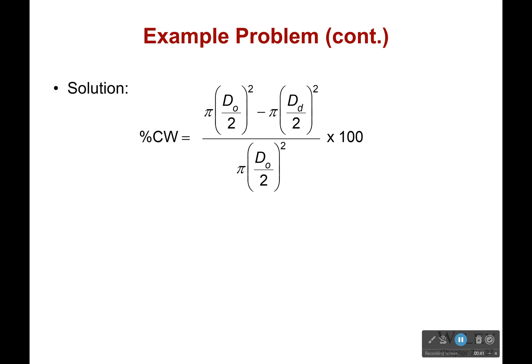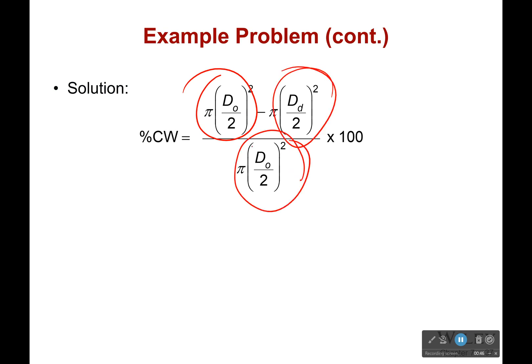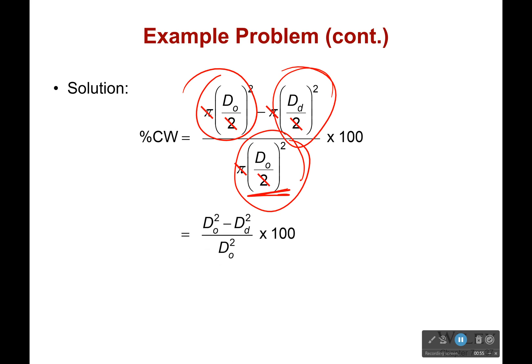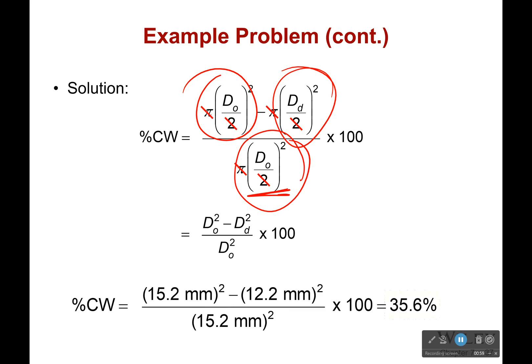We have our initial area and we have our new area, and we put that over our initial area. It's always what you had to begin with on the bottom. Most of that cancels out, and so it's just a function of the diameter. As we plug that in, we get 35.6 percent cold work.